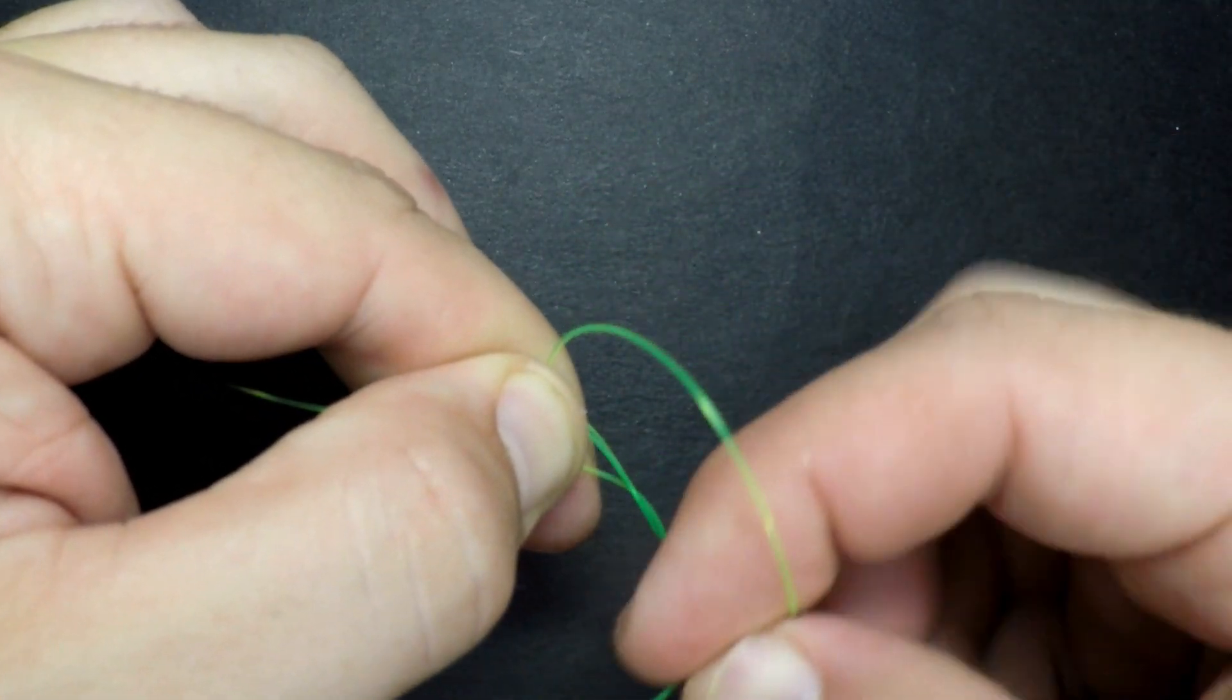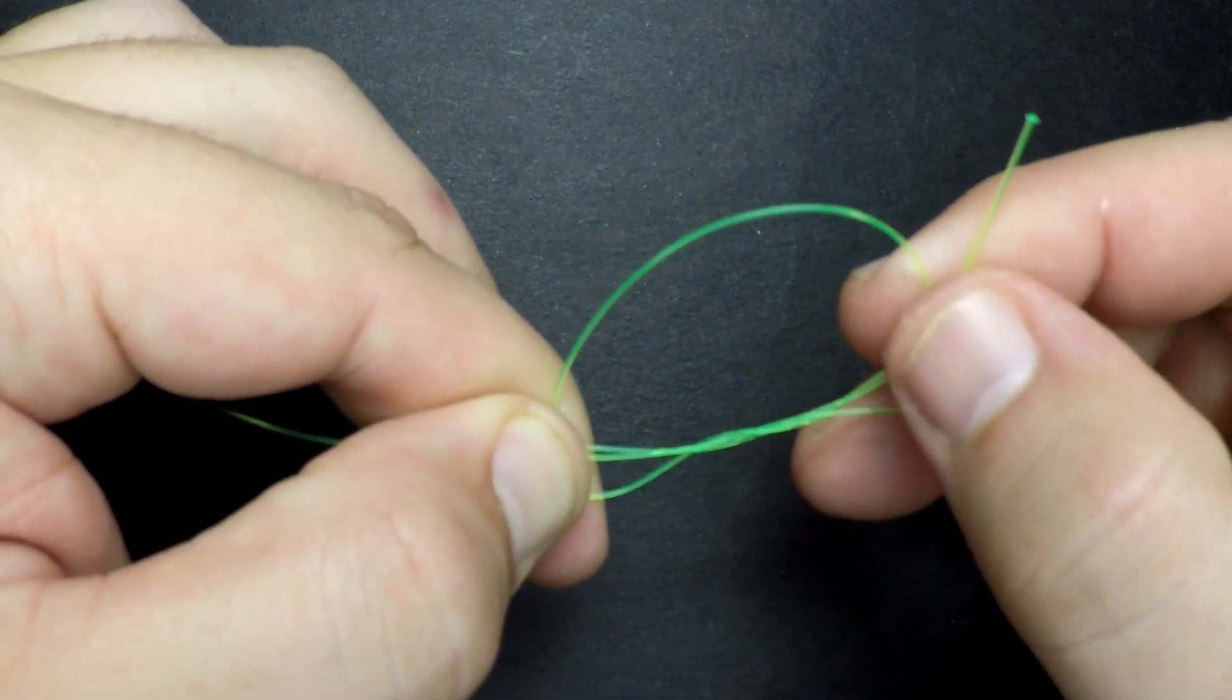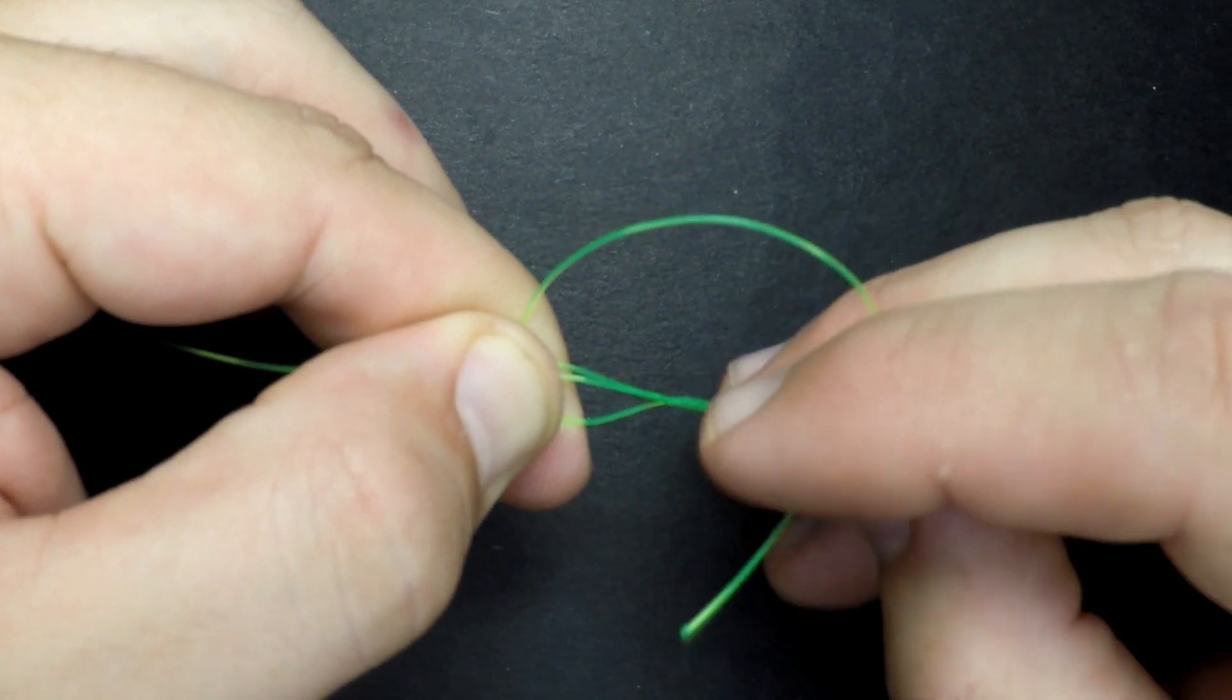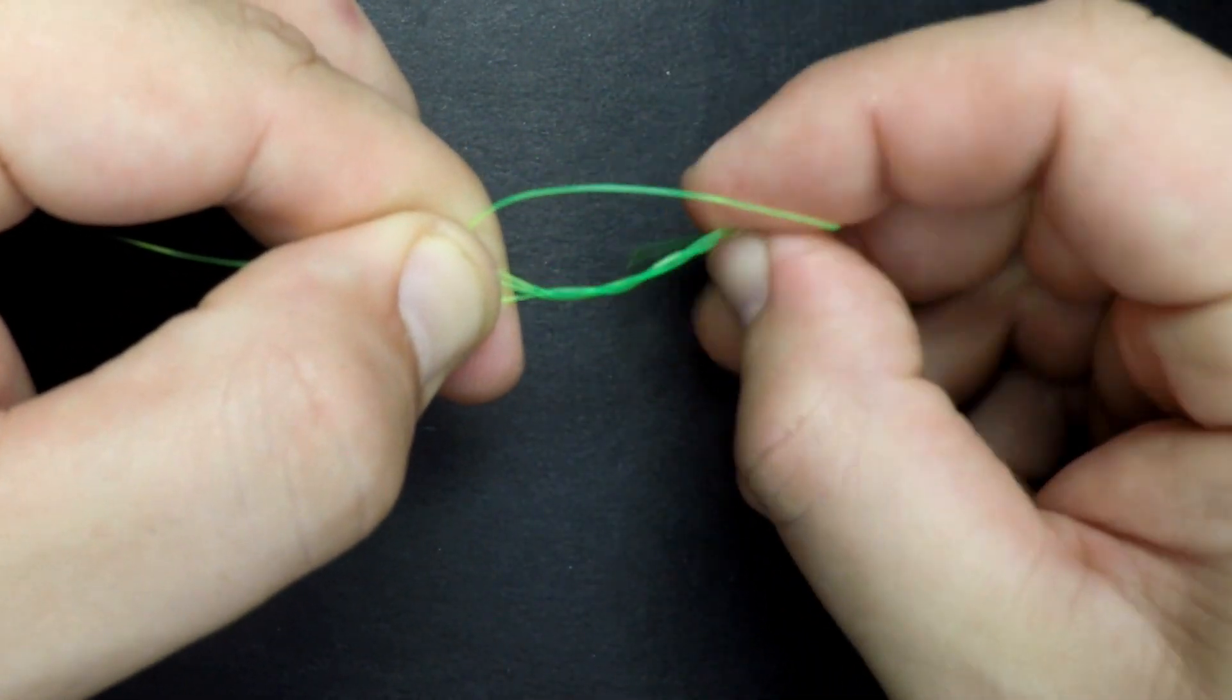I'm going to do this about four times because I have a really strong test line, but if you're using a weaker line, let's say 8 or 10 pounds, you'll want to consider making a few more wraps.